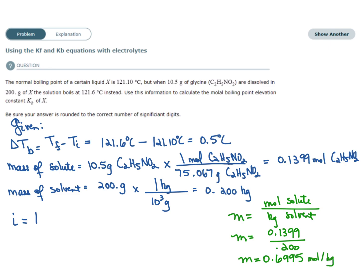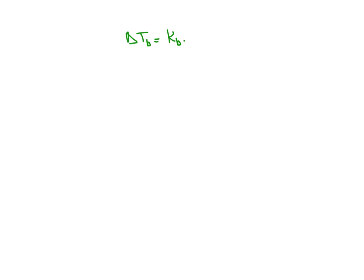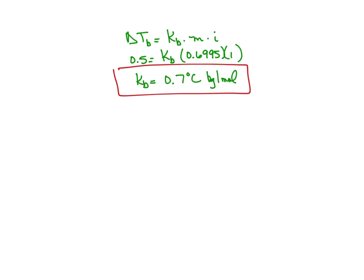Now I have all the given values. Plugging into the equation — change in boiling temperature equals Kb times M times I — delta Tb is 0.5, molality is 0.6995, and I is 1. Solving, Kb equals 0.7 degrees Celsius kilograms per mole. That is the final answer. Good luck and keep practicing.